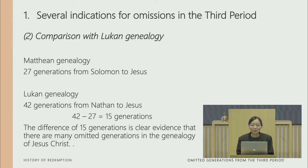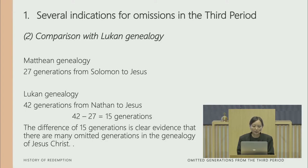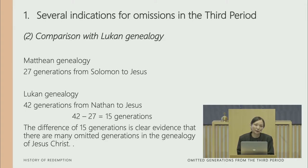Next, we compare it with the Lucan genealogy. In the Lucan genealogy, there are 27 generations from Solomon all the way to Jesus, and 42 generations from Nathan to Jesus. So 42 minus 27 gives a difference of 15 generations across the two genealogies. This is clear evidence that there are many omitted generations in the genealogy of Jesus Christ recorded in Matthew chapter 1.